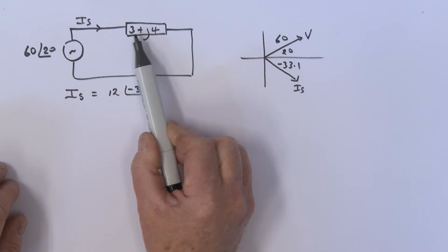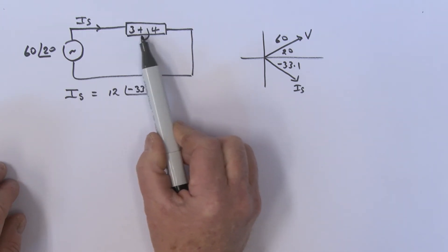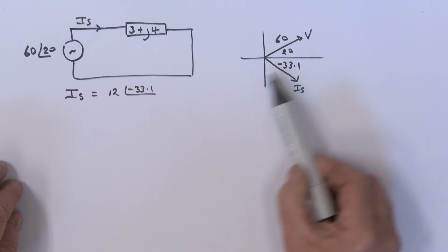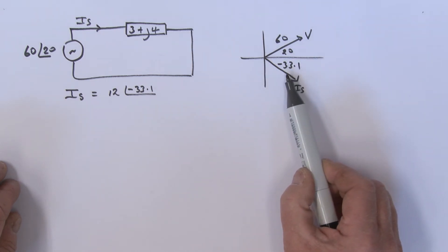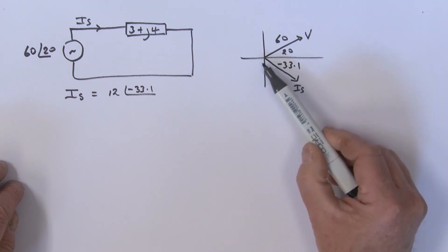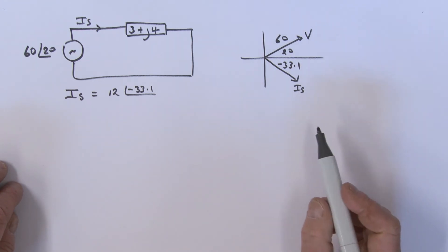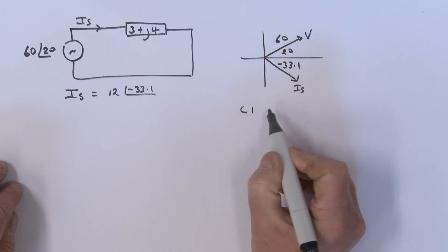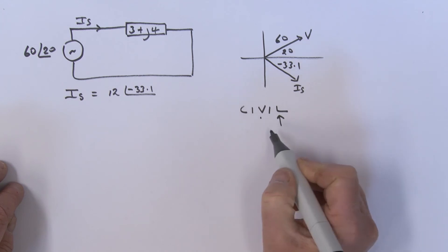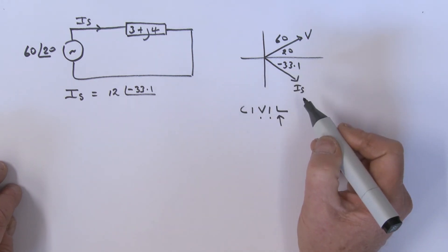This is the previous problem where I've added up the real and imaginary parts of the impedance to get total impedance in rectangular form. Voltage is at 20°, current I_s is at −33.1°. Another way to look at leading and lagging: if the current lags the voltage, it's a lagging power factor and the circuit is inductive. Remember the acronym CIVIL — in an inductor, voltage leads the current, or the current lags the voltage.